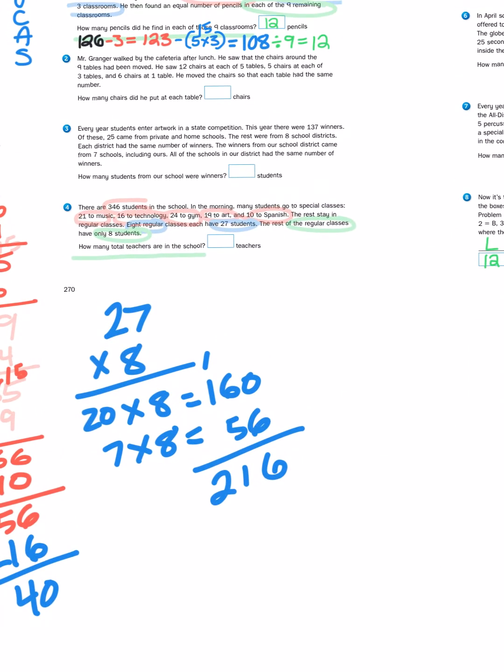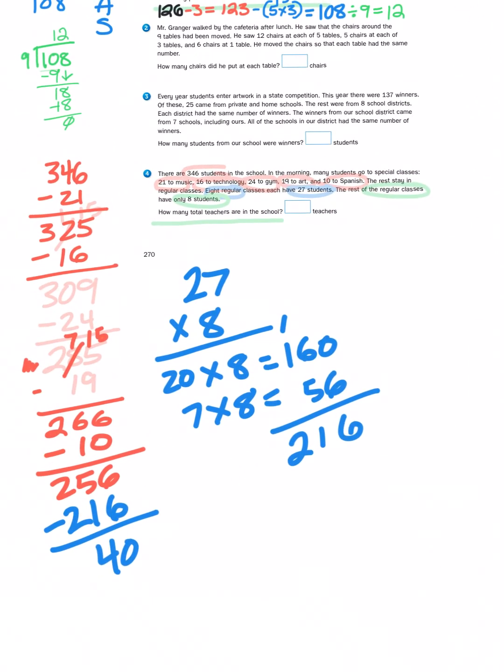It says the rest of the regular classes only have eight students. So if I have 40 students, I'm going to divide them into groups of 8. I'm going to have five more groups of 8.